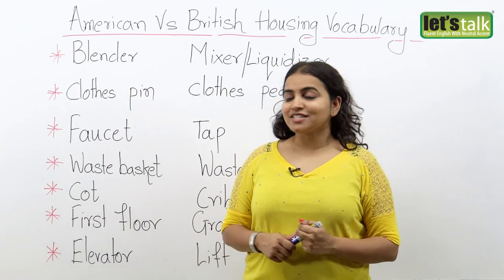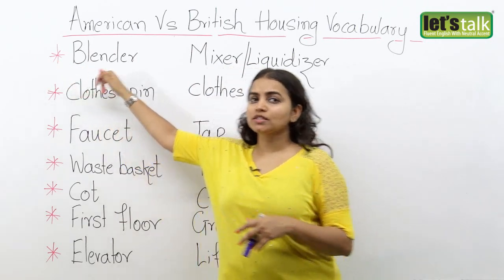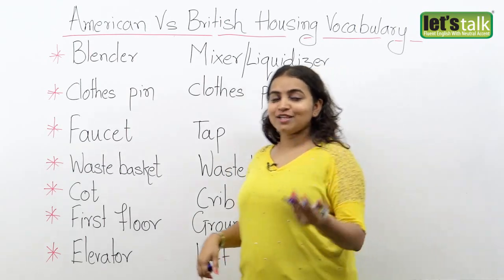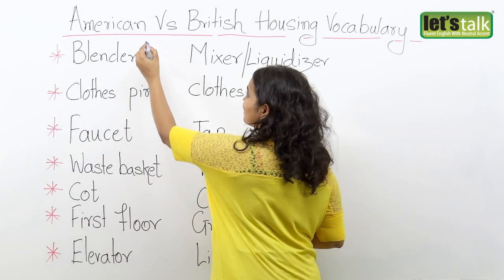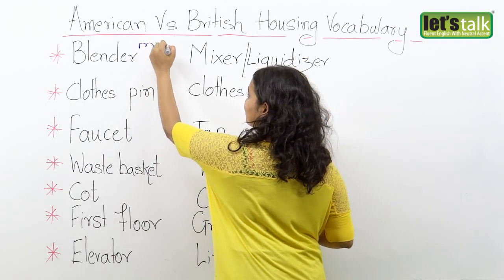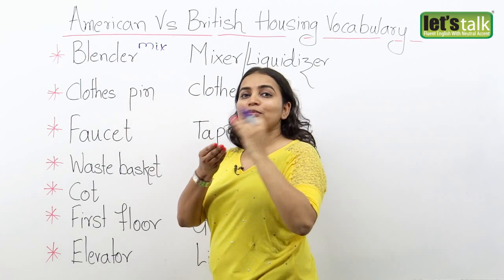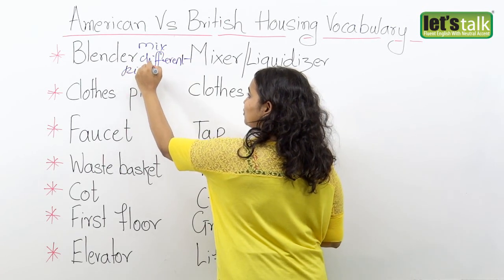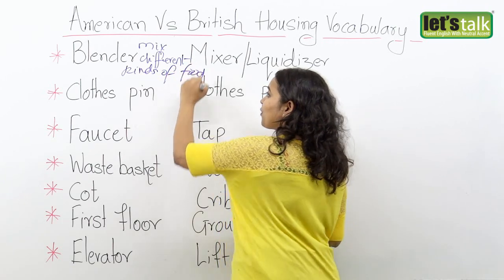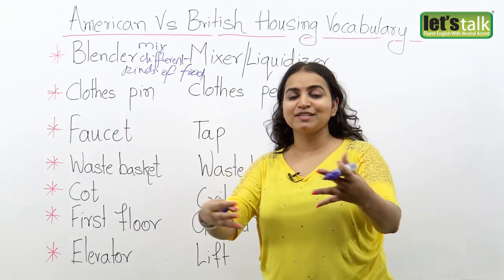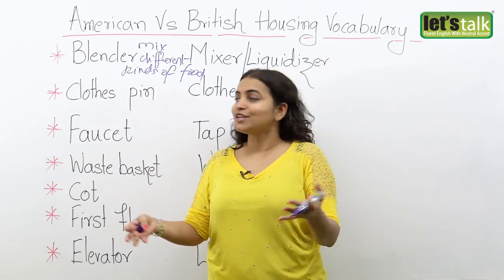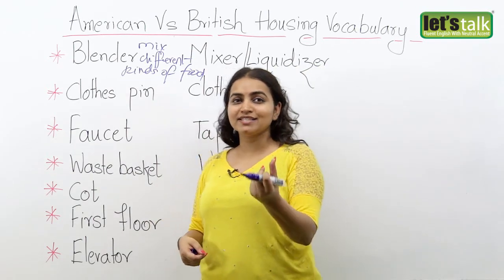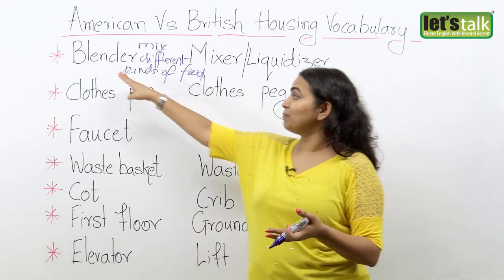Our next word is a blender, which is called a mixer or a liquidiser in England. A blender or mixer is equipment used to mix or make really small pieces of different kinds of food or ingredients for a particular dish. For example, if you want to make a banana milkshake, you put pieces of banana into the blender, mix it into a nice paste, and then add the milk to it.